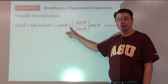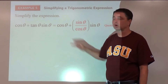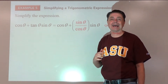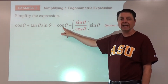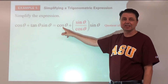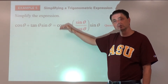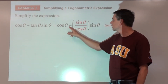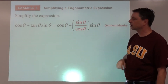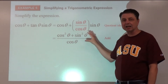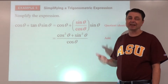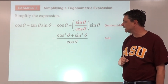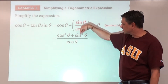Multiplying through gives sine squared theta over cosine theta. To add the cosine theta term, we need a common denominator, so we multiply cosine theta top and bottom by cosine theta. This gives cosine squared theta over cosine theta, plus sine squared theta over cosine theta, which we can then add together into one fraction.